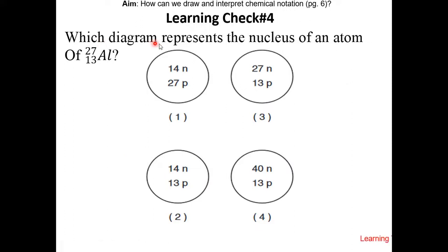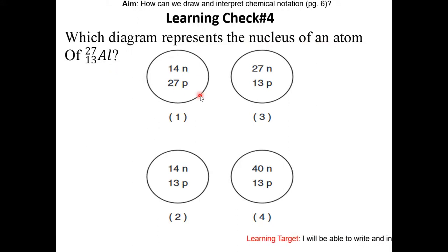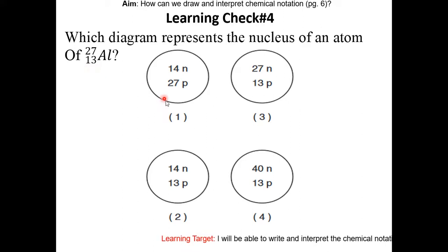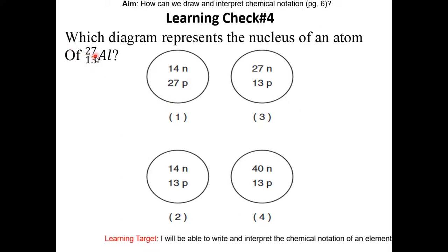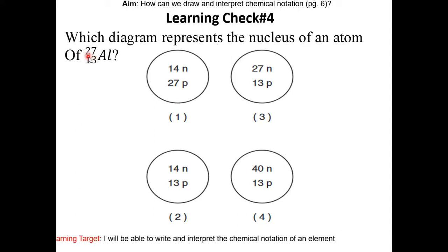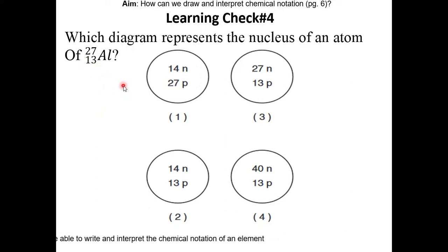Learning check number 4: which diagram represents the nucleus of the atom of aluminum? Pause the video and resume once you have the answer. The atomic number is 13 — that's the number of protons, so choice 1 is wrong. 27 is not the number of neutrons; it is protons plus neutrons. So you do 27 minus 13, which gives us 14 — that is the number of neutrons. So the answer is choice 2.